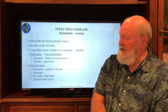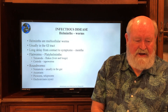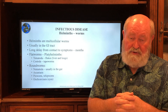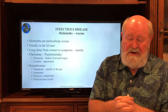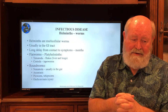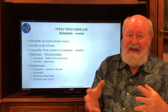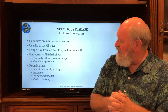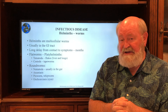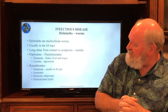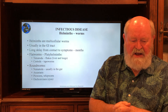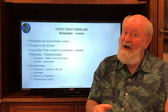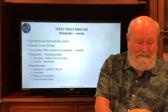The last family is called helminths — multicellular worms. They usually live in the GI tract and there's a long delay in onset of symptoms, because the person has to consume them — which is the most common way you get them, though you can even get them through your feet. Later in the course, we'll have a whole section on tropical medicine. The delay is typically months, even up to years. There are flatworms (platyhelminths), which include trematodes or flukes and cestodes (tapeworms), and roundworms called nematodes — things like ascariasis, pinworm, hookworm, and onchocerciasis, which is the most common cause of blindness in the world.